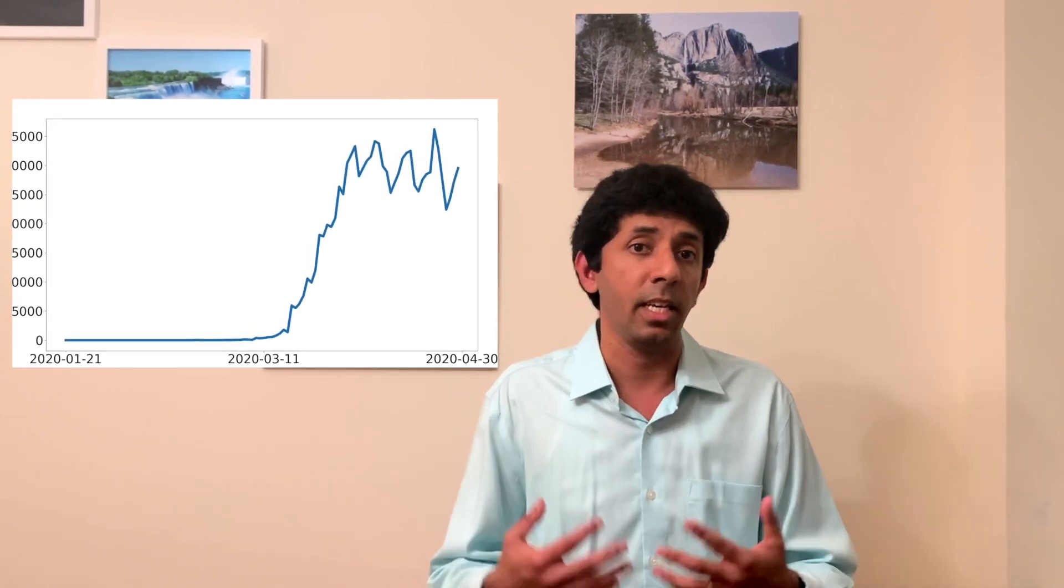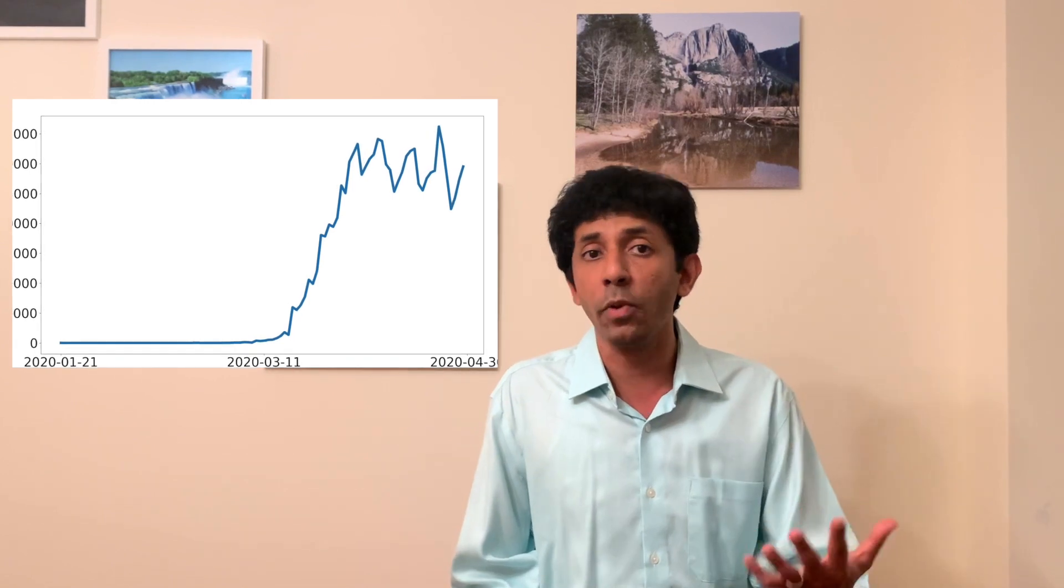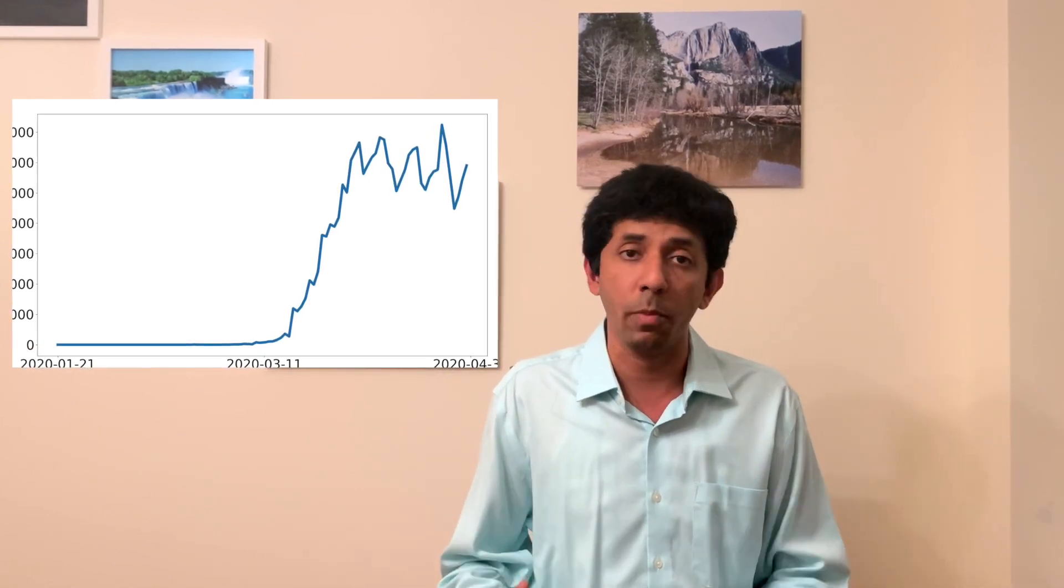They have not decreased and even in the beginning of June the number of cases being reported by day continues to be high. For Italy and Spain, the number of cases initially increase and then they have started to decrease. Different countries have different kinds of spread because of the different measures that different countries have taken. So the data from different countries looks very different.